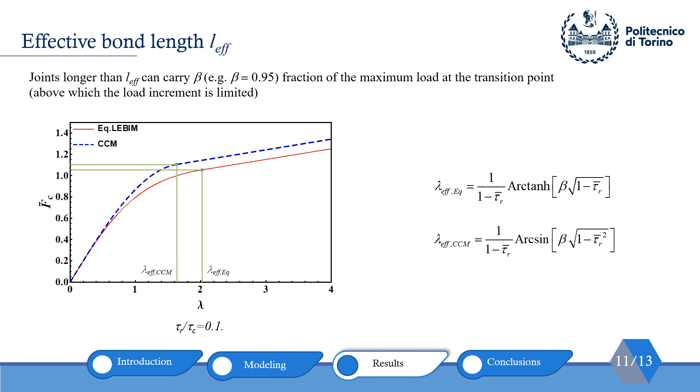An important parameter called effective bond length can be defined such that joints larger than effective bond lengths can carry better fraction of the maximum load at the transition point. By transition point, I mean lambda_limit or lambda_limit that separates equations for short and large bond lengths. As LEBIM wasn't accurate enough, we haven't presented the results here. On the other hand, you can see an important property of the effective bond lengths is that beyond these lengths, there is no significant load increment.